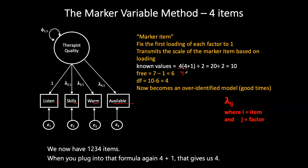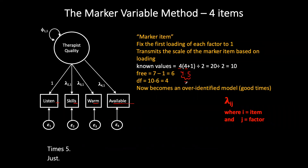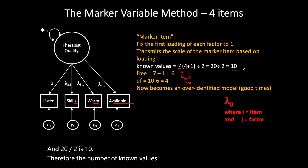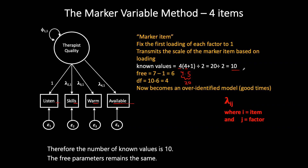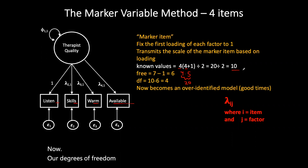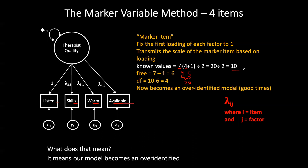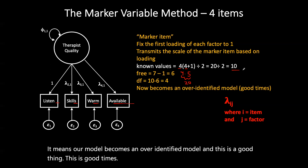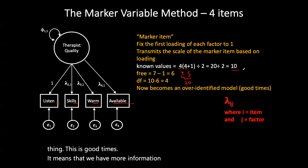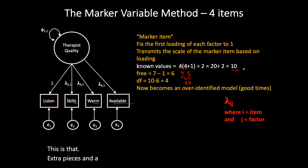We calculate the known values as: four times (four plus one), all divided by two. Four plus one is five, times four is twenty, divided by two is ten — so the number of known values is ten. The free parameters remain the same: seven minus one (because we fixed one) equals six. Now our degrees of freedom is ten minus six, which equals four. This means our model becomes over-identified — good times! It means we have more information than we need to estimate our parameters, giving us more ways to see if the picture fits together properly.